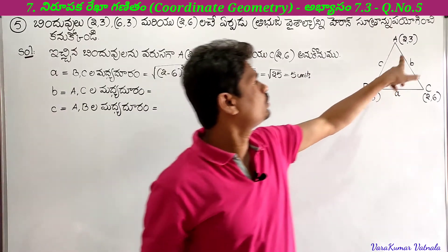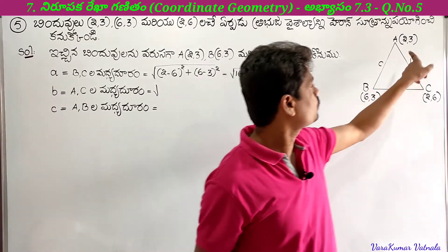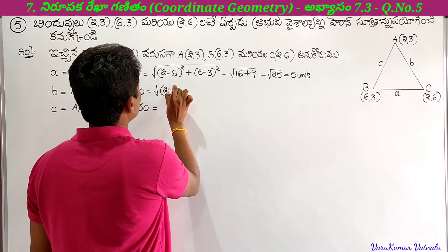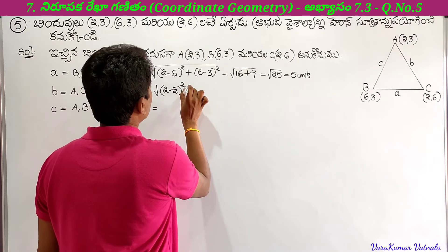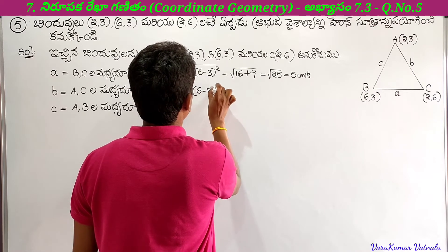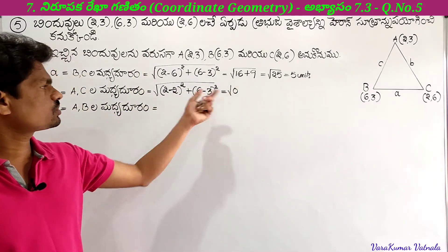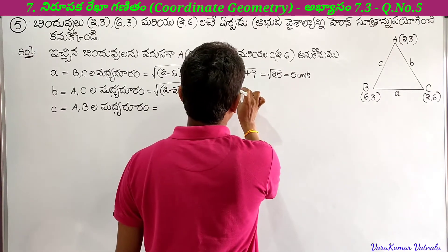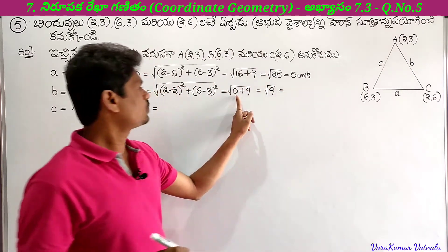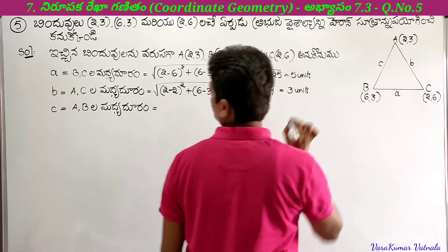Next, b is the distance AC. Applying the distance formula with x1,y1 and x2,y2: square root of (2 minus 2) whole square plus (6 minus 3) whole square. So 2 minus 2 gives 0, 0 square equals 0. 6 minus 3 gives 3, 3 square equals 9. Square root of 0 plus 9 equals square root of 9, which equals 3 units.